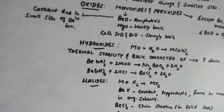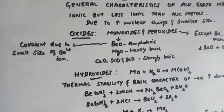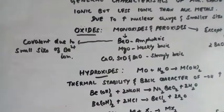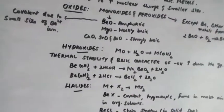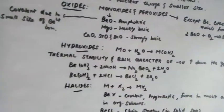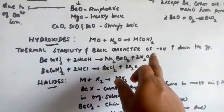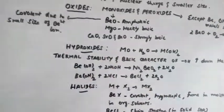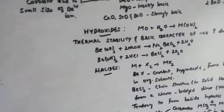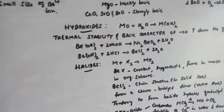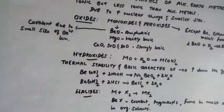Now let us see how hydroxides are formed — by treating the alkaline earth metal oxide with water. Alkaline earth metal oxide dissolved in water gives alkaline hydroxide. For example, calcium oxide in water gives calcium hydroxide. Thermal stability and basic character of the hydroxide ion increase down the group. These two equations are important — to prove that beryllium hydroxide is amphoteric, you must write both equations.